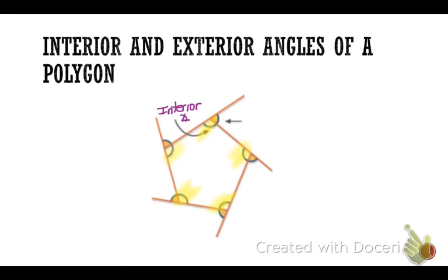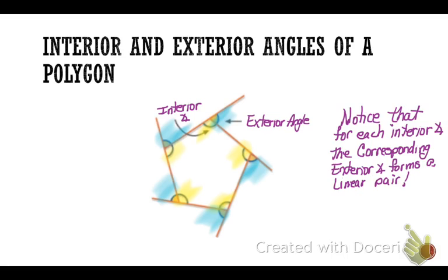The exterior angles of a polygon are formed by extending the sides, and it creates one exterior angle at each vertex. I've highlighted those in blue. Now, I would like you to notice that for each interior and corresponding exterior angle, it forms a linear pair, so therefore they're supplementary.